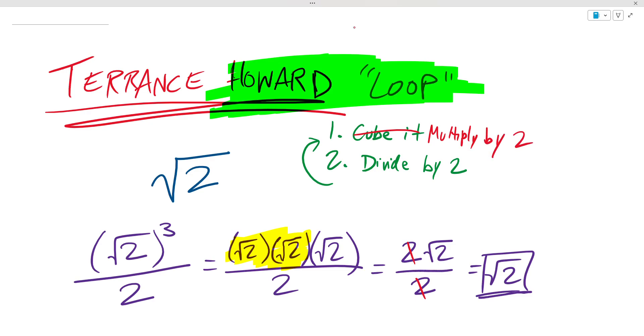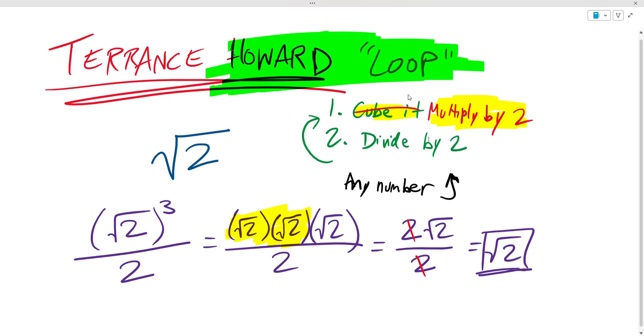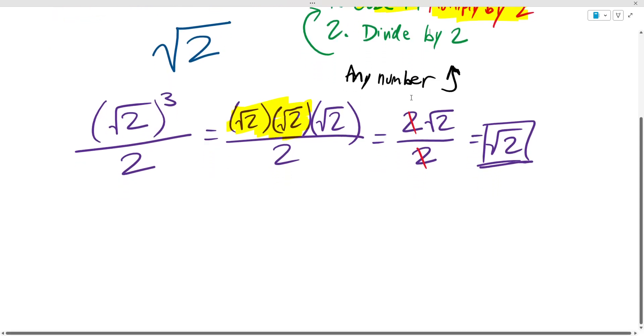Then this astonishing little loop is not all that impressive, because you can take literally any number and put it through this process - multiply by two, divide by two, multiply by two, divide by two. What he's astonished with is the fact that cubing something and multiplying it by two are equivalent operations. To his credit, yeah, the square root of two is the only number in which cubing it is the same as multiplying it by two.